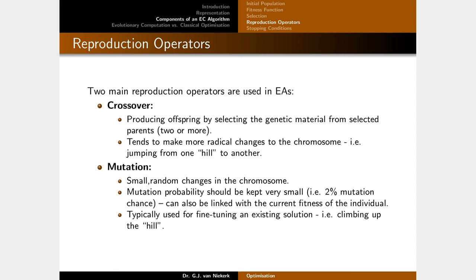Next are the reproduction operators. There are two main ones used in all evolutionary algorithms. Crossover produces offspring by combining genetic material from two or more selected parents, making more radical changes to the chromosome — like finding the tallest mountain to climb. Mutation makes small random changes to the chromosome; mutation probability should be kept very small, with 2% as a good starting point. Mutation is typically used for fine-tuning an existing solution — climbing the mountain you've found.